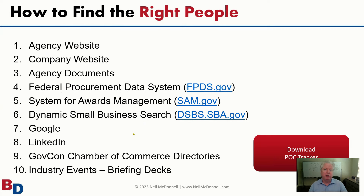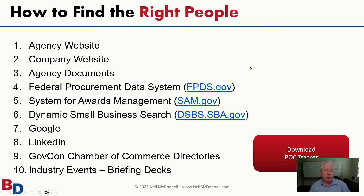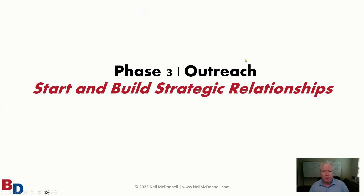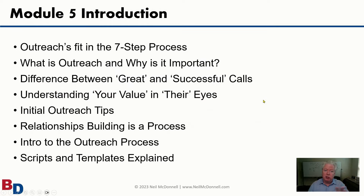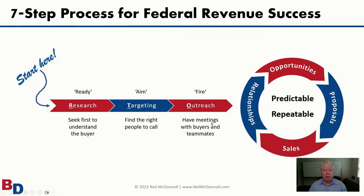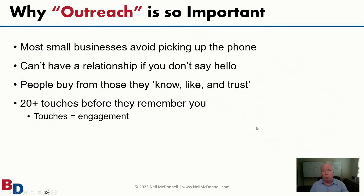We have a free directory on our website of over 1,000 small business specialists in federal agencies, as well as the top 100 large prime contractors. So that covers how to find names. Now let's talk about outreach — the idea of picking up the phone and making calls.